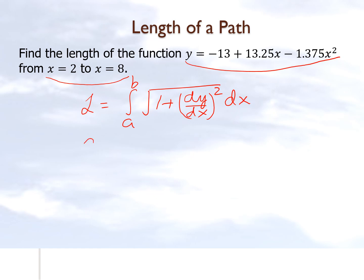We already know that a equals 2, b equals 8, and the first derivative equals the derivative of the second-order polynomial, which turns out to be 13.25 minus 2.75x.